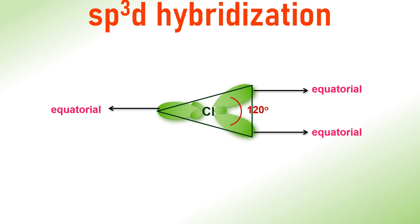In trigonal bipyramidal geometry, three of sp3d hybrid orbitals are arranged in a trigonal plane by making 120 degrees of angle with each other. These are referred to as equatorial orbitals.